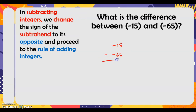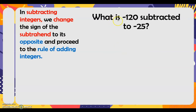Next: what is the difference between negative 15 and negative 65? We change the sign of the subtrahend — it becomes positive — then proceed to the rule of addition. Since they are unlike sign, we subtract: 65 minus 15 is 50. Copy the sign of the greater absolute value — 65 has a greater absolute value and it is positive — so our answer is positive 50.